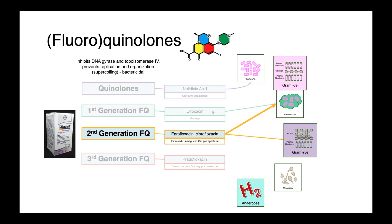Our second-generation fluoroquinolones are those that are perhaps most widely used, drugs like ciprofloxacin and enrofloxacin. These have improved gram-negative activity compared to our first-generation fluoroquinolones and our quinolones, and also some gram-positive spectrum.